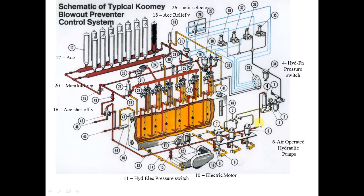After the switch, the air is transmitted to number five, called the air shutoff valve. This is also a manually operated valve. It is open all the time during operation, but if we close it, we can shut down the air pump — for example, to test the electric pump.